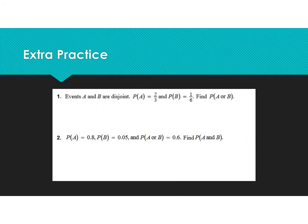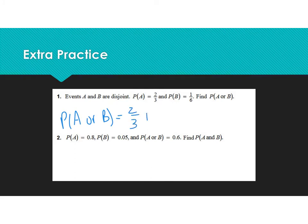Let's look at your extra practice. The first one tells us flat out that events A and B are disjoint — there's no overlap. The probability of A happening is 2 thirds. Probability of B happening is 1 sixth. We want the probability of A or B. So to find the probability of A or B happening, you just add your two probabilities. There's no overlap, so I'm not going to subtract anything. I make common denominators and end up with 5/6. When you go to enter your answers on Big Ideas, make sure to read the directions about what form to enter them.